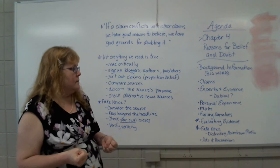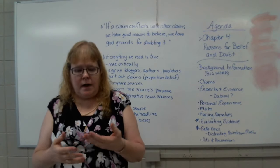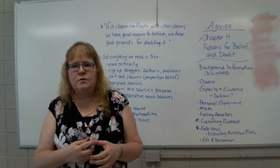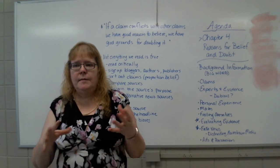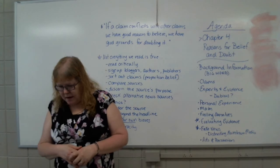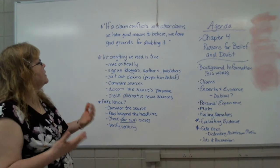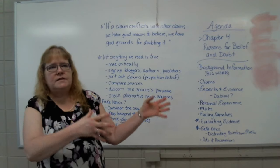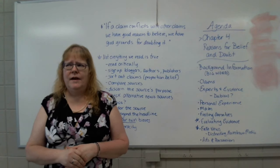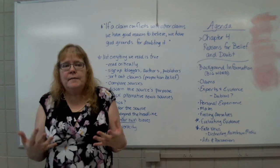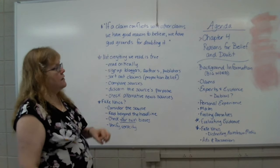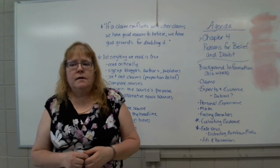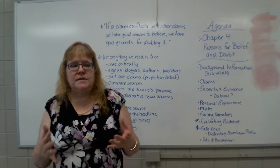When you're looking at claims we believe — remember in logic and critical thinking, belief, claim, statement, premise, and conclusion are all basically the same idea with maybe different nuances about where they show up. If a claim conflicts with other claims we have good reason to believe — our whole worldview, our philosophy of life — and we know these things are true, then this other idea comes along that doesn't agree, we have good grounds for doubting it. That's a lot of what this chapter shows us: ways to weed out bad claims from good ones.